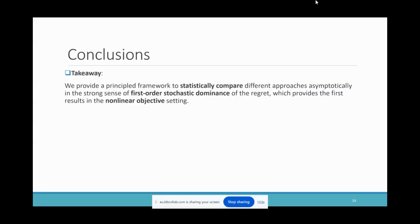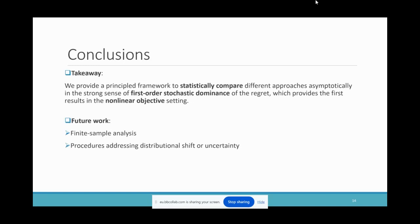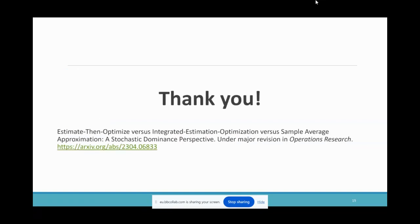To conclude, in this work we create a principled framework to statistically compare different approaches, asymptotically in the strong sense of first-order stochastic dominance of the regret. Our results are the first in a nonlinear objective setting. In the future, we are interested in balancing the error appearing in the zero-order regret and the first-order regret, taking into account the degree of model misspecification. The second direction is to study procedures that can address distributional shift or uncertainty in the data. Thank you very much.